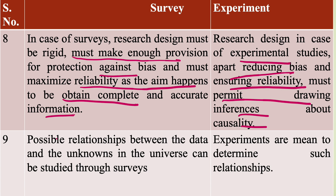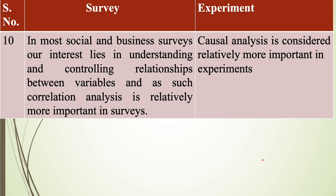The possible relationships between the data and the unknowns in the universe can be studied through surveys, whereas experiments are meant to determine such relationships between variables. In most social and business surveys, interest lies in understanding and controlling relationships between variables, and as such correlation analysis is relatively more important in surveys. But in the case of experiments, causal analysis is considered relatively more important.